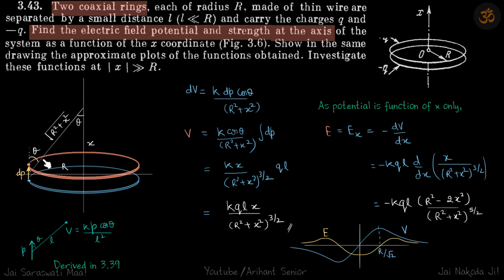We are going to consider a small part of both the rings, and if we connect them together that will form a dipole, a small dipole. Due to this dipole we'll find the potential and field here, and then we can just integrate the dipole to get the total electric field and potential at this point.